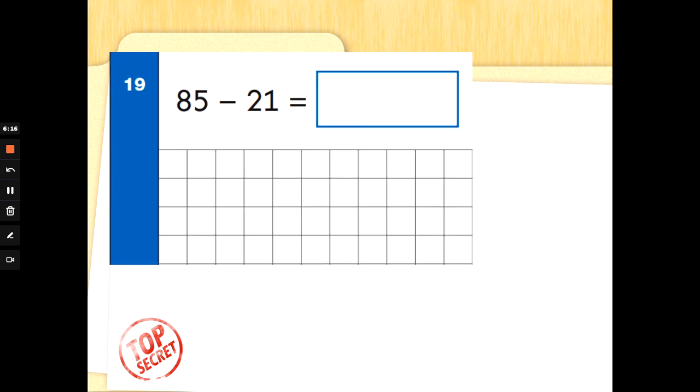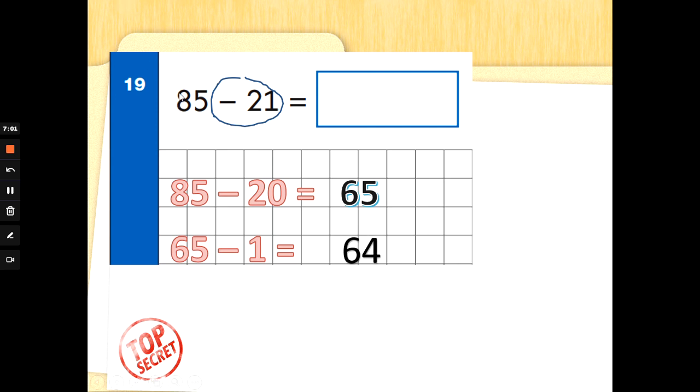Number 19. 85 take away 21 equals. So we're subtracting. We've got to count back. We want to subtract. Now this squares again which means you can do some working out if you need it. I would have a look at the tens first. I would take the first number and take away the 20 from 21. 85 take away 20. Two fingers up. Let's count back in tens. 85, 75, 65. Well done. Then I will take the 65 and take the 1 away from the 21. 65 take away 1. Not 65 take away 10. 65 take away 1 is 65 in our head, 64. So the answer is 64. You could have also worked out that 8 tens take away 2 tens is 6 and 5 ones take away 1 is 4, 64. Well done.